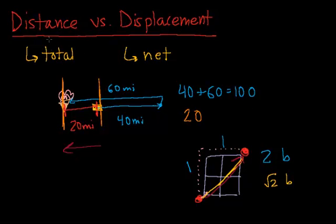Therefore, distance is a scalar because it only has a magnitude, and displacement is a vector because it has both a magnitude and a direction.